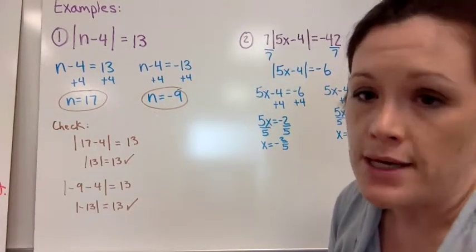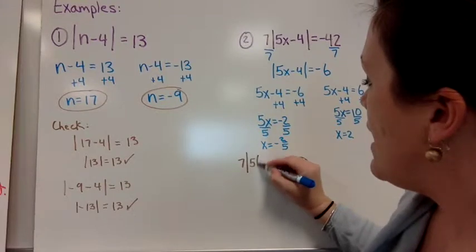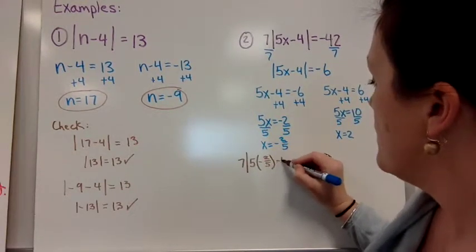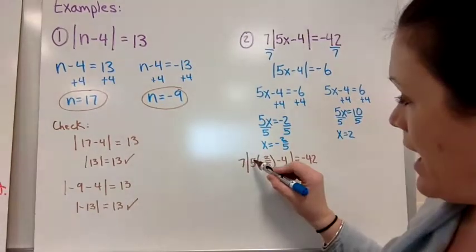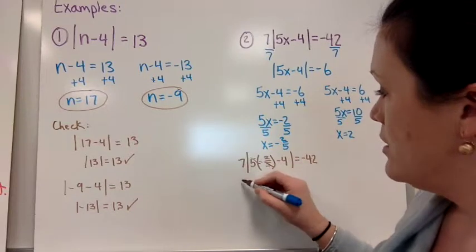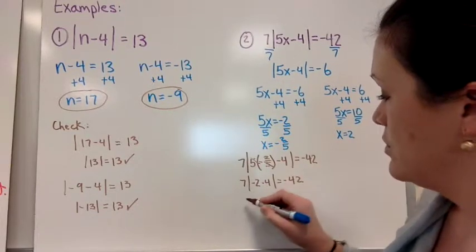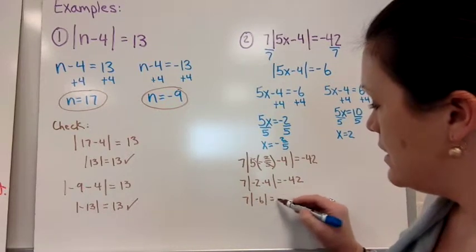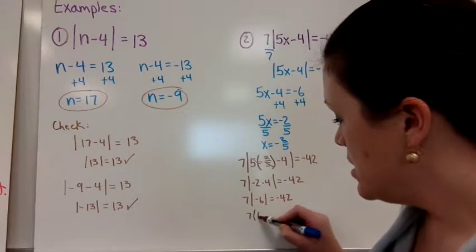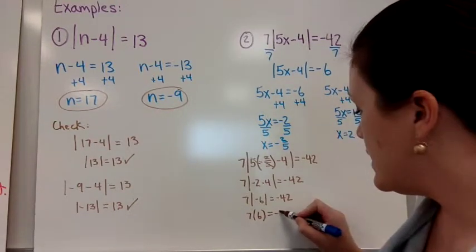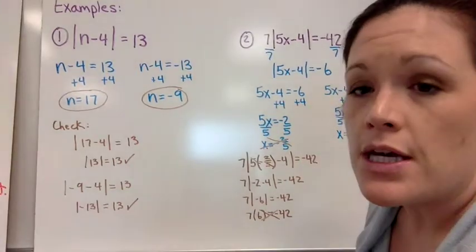Let's plug back into the original equation — the one with the seven in front. Plugging in x equals negative two fifths, the fives cancel, giving seven times the absolute value of negative two minus four equals negative 42. That simplifies to seven times the absolute value of negative six, which is seven times six, equals 42 — not negative 42. So that solution doesn't work. Now check x equals two: seven times the absolute value of five times two minus four equals seven times the absolute value of six, which is positive 42, not negative 42. That also doesn't work.